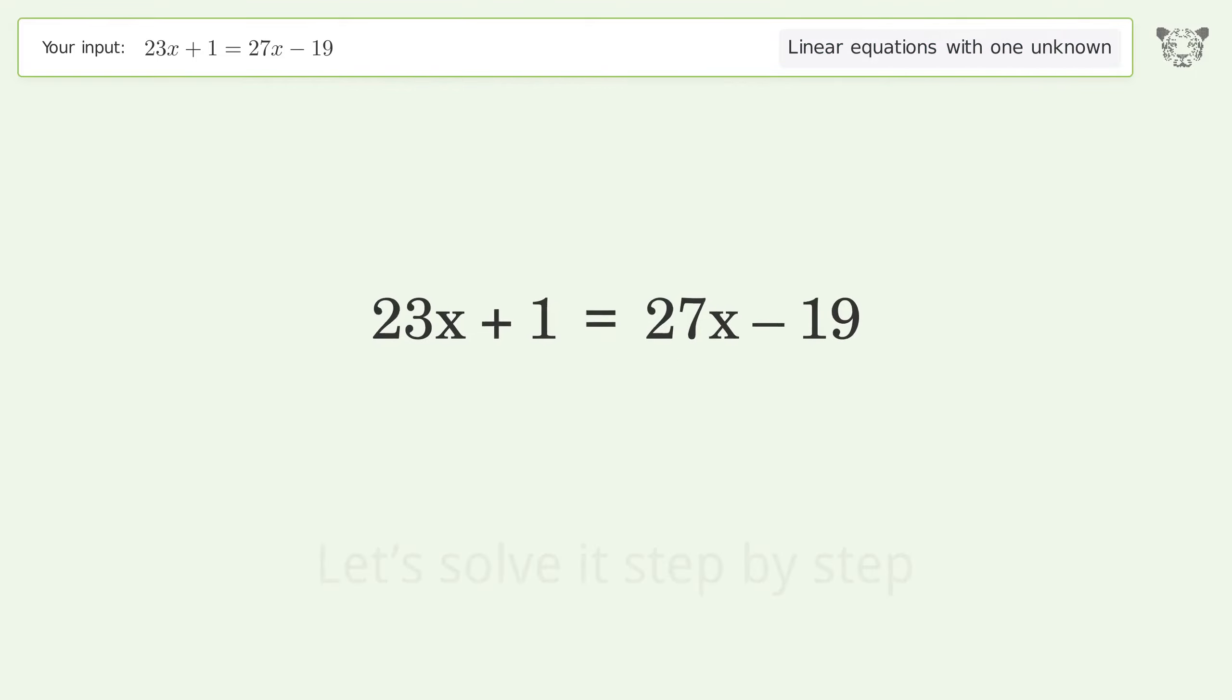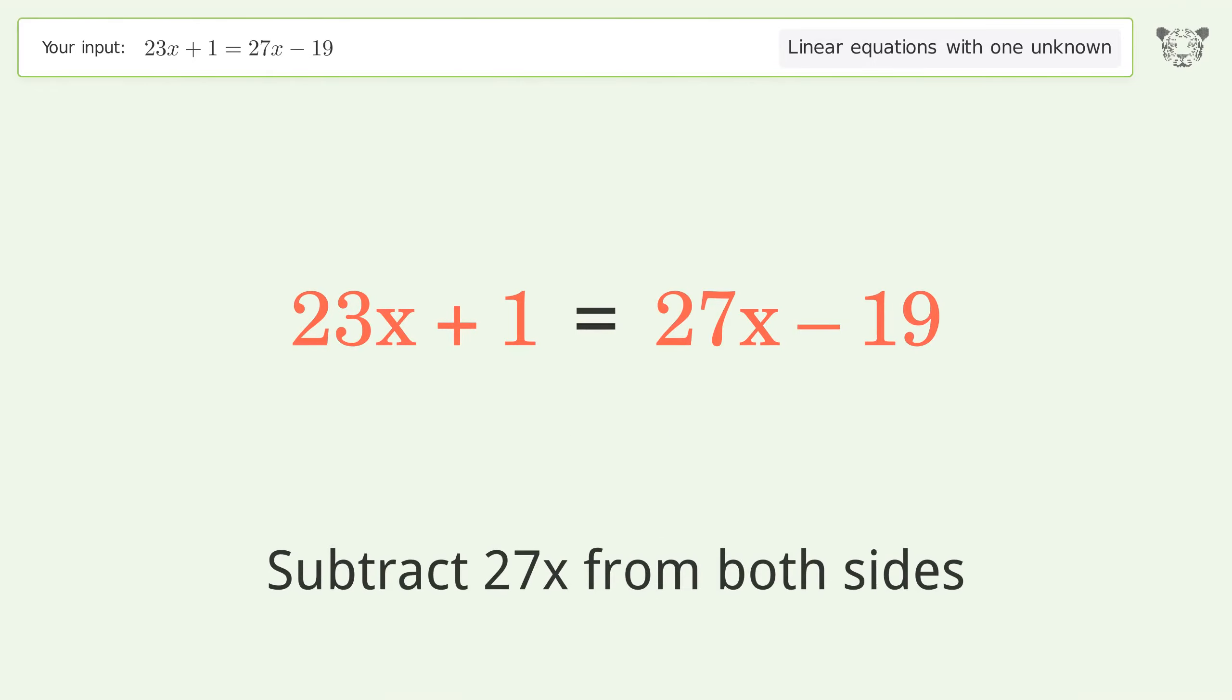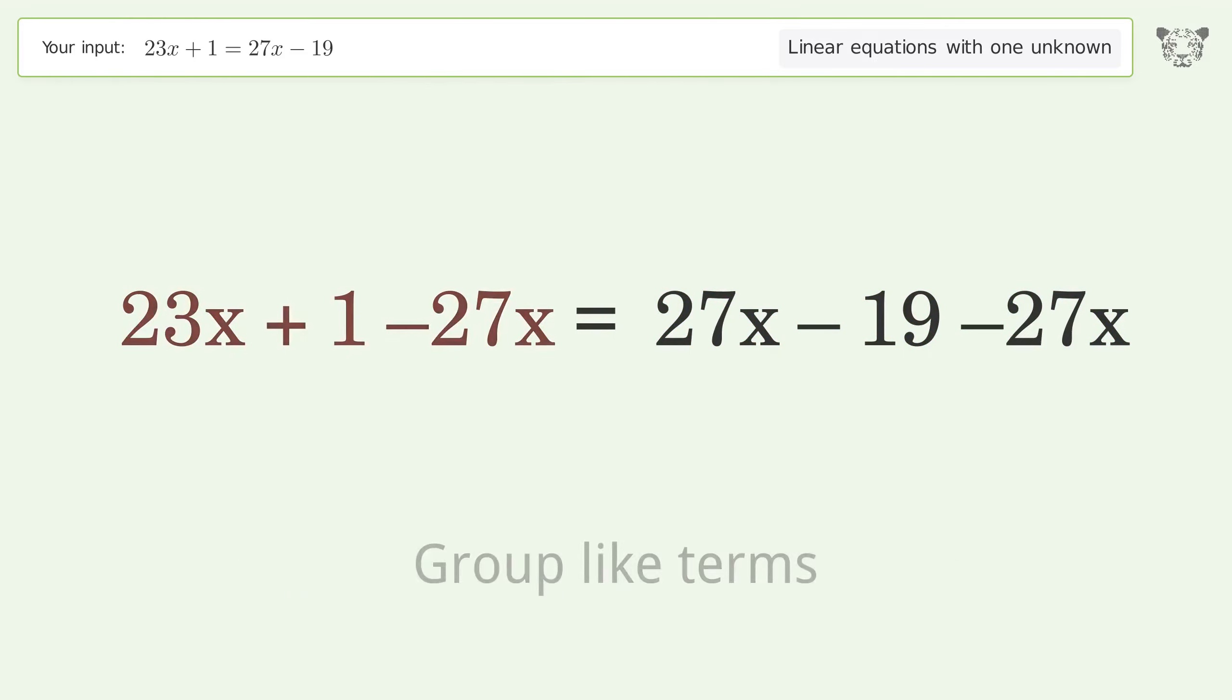Let's solve it step by step. Group all x terms on the left side of the equation. Subtract 27x from both sides. Group like terms.